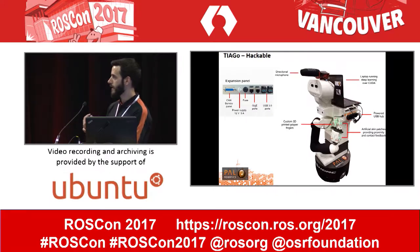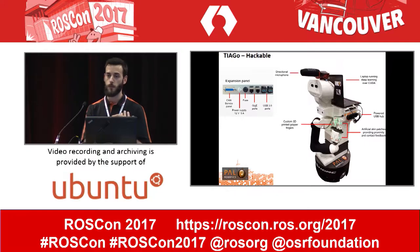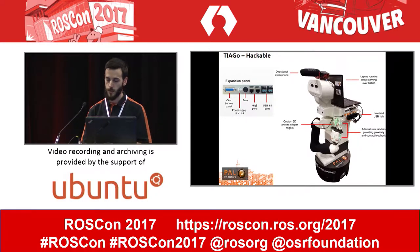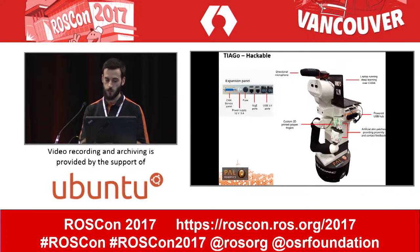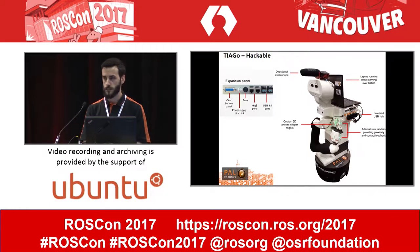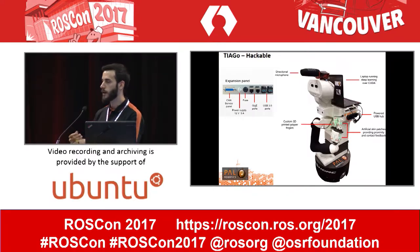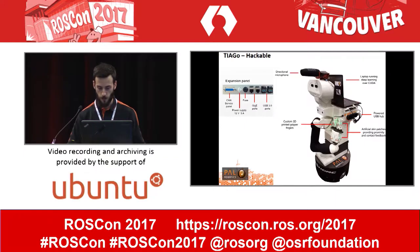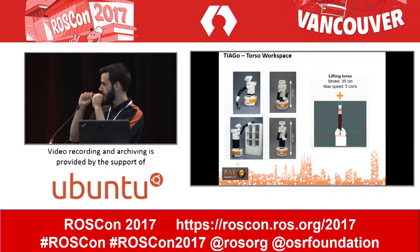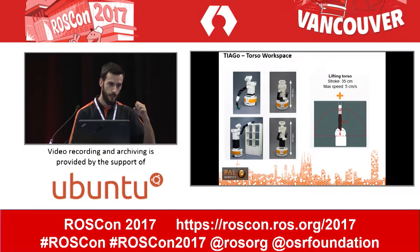We've also made an effort to make the robot easily extensible — there are mounting points on the head and back so you can add extra sensors and processing power. For instance, a couple of months ago at RoboCup, the Technical University of Munich participated with a TIAGo. They added an artificial skin on the gripper to detect contact, printed their own fingers to replace ours, added extra processing power with a laptop on the laptop tray, and a directional microphone — all without modifying the internals of the robot. We provide an expansion panel with Ethernet sockets, USB plugs, and a power supply.